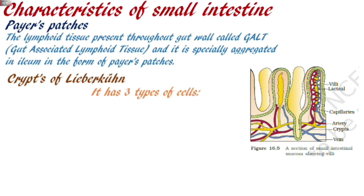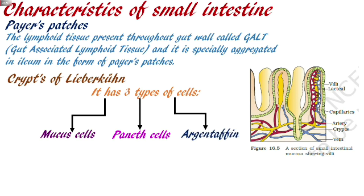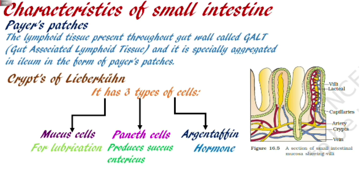The crypts of Lieberkühn contain 3 types of cells. First are mucous cells, whose function is lubrication. Second are Paneth cells, which are responsible for intestinal juice release — the intestinal juice is called succus entericus. Third are argentaffin cells, whose role is to secrete hormones. So Peyer's patches relate to defense and immunity, and the crypts of Lieberkühn relate to digestion. Digestion and absorption is the biggest role of the small intestine.